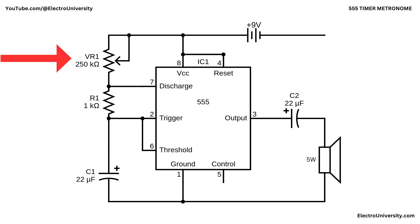VR1 is your tempo knob. C1 sets the overall range. R1 protects the 555 and fixes limits. The 555 produces evenly spaced pulses, and C2 delivers those pulses to the 5W speaker as crisp metronome clicks.